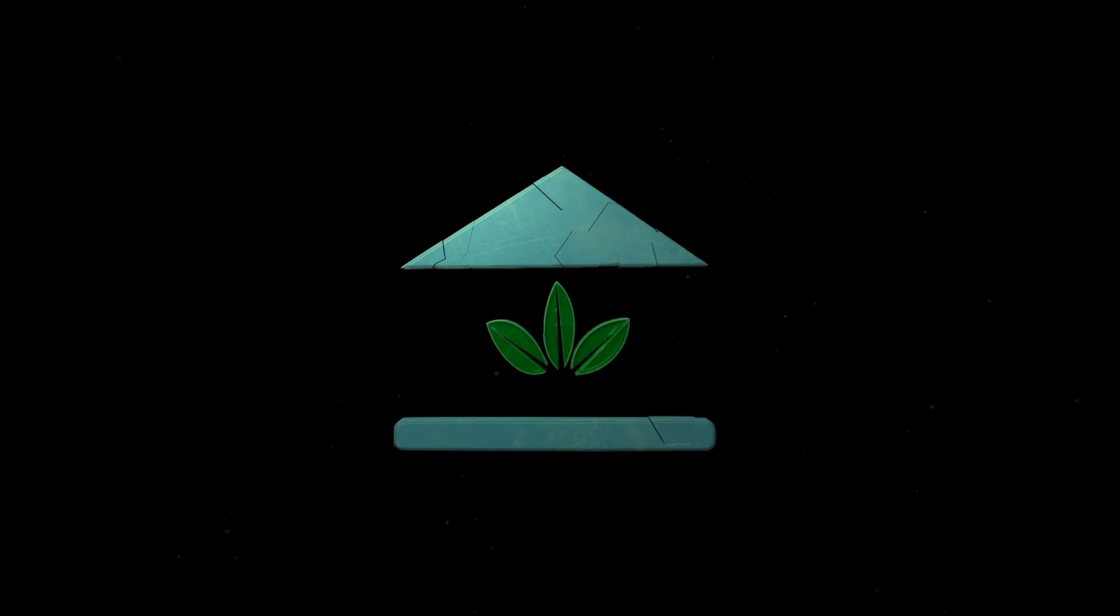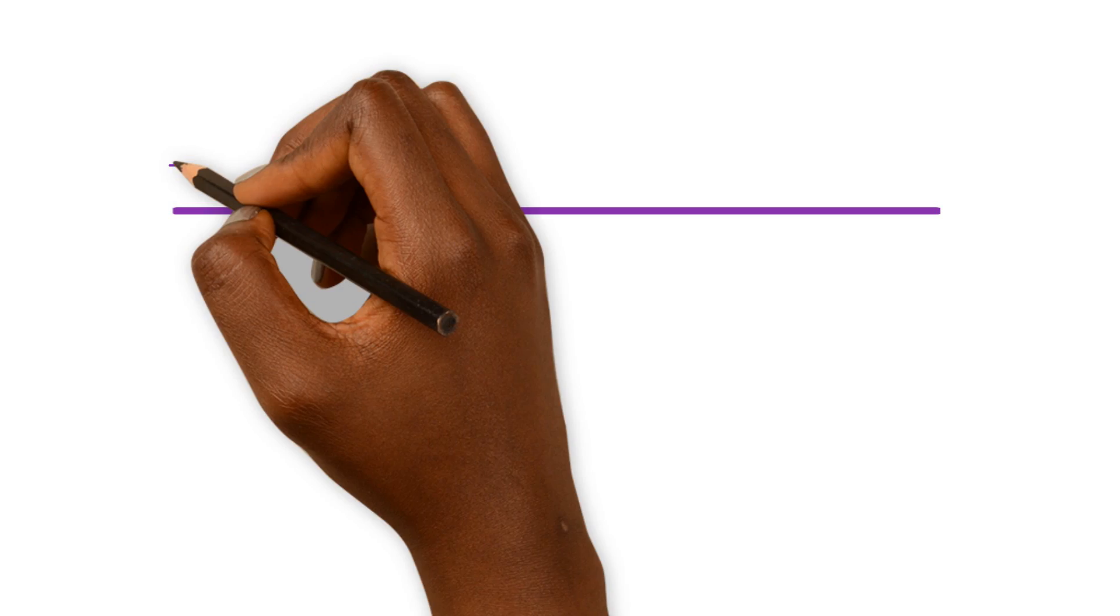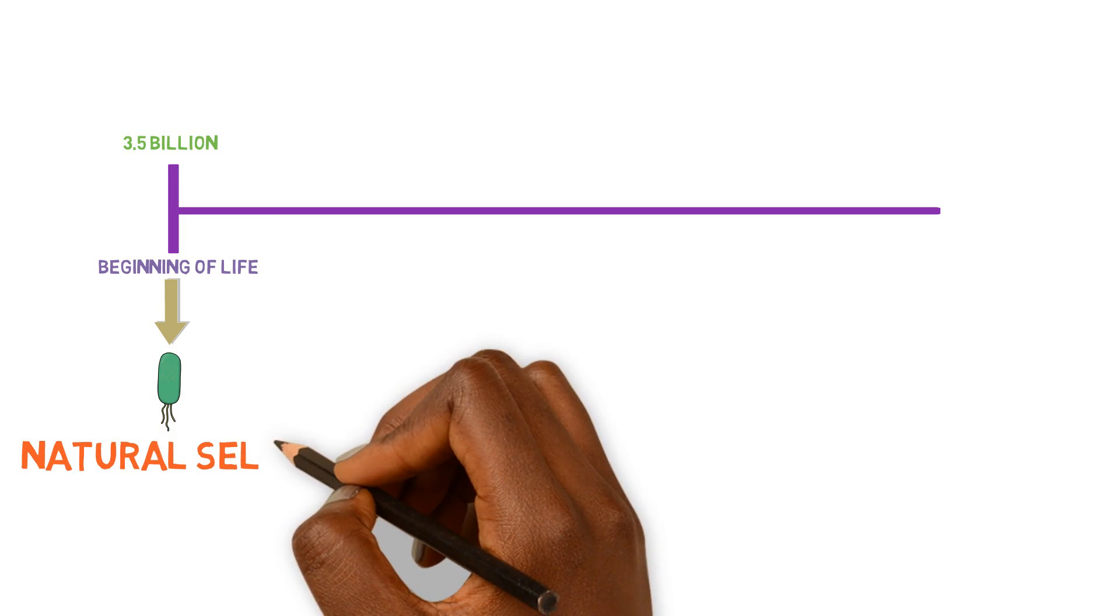The School of Aquaponics. Life originated around 3.5 billion years ago and started with simple organisms like present-day bacteria. Over thousands of years, the complexity of these cells increased through a process known as natural selection.